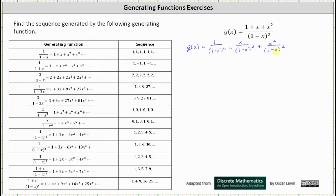Now let's write each fraction as a product. We write g(x) as one divided by the square of one minus x, plus x times one divided by the square of one minus x, plus x squared times one divided by the square of one minus x. Looking at our table, one divided by the square of one minus x equals the infinite series one plus two x plus three x squared plus four x cubed plus dot dot dot.